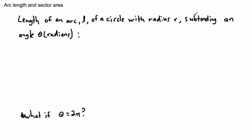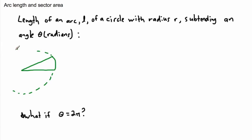What do I mean by subtend? I just mean that's the angle you get when you look at it. So it helps to draw this — some sort of piece, going around in a circle. If we consider your whole circle going all the way around like this, this would be a circle going all the way around.